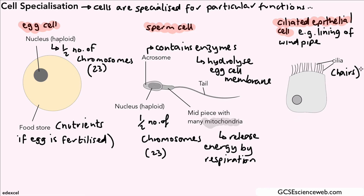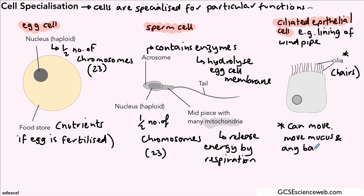Well, epithelial is covering — epithelial tissue is covering tissue, and those cells help to cover the inside layer of the windpipe or the trachea. Those cilia can move in a kind of wafting fashion, and when they move they will move any mucus which might contain microorganisms, bacteria, and also possibly any dust. They can move that outwards — up and out from the windpipe — so that there's a much less chance of infection in the windpipe.